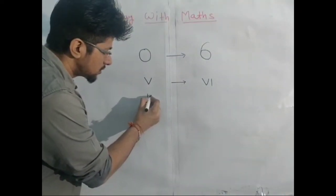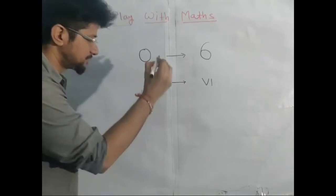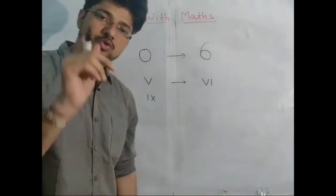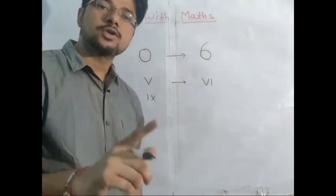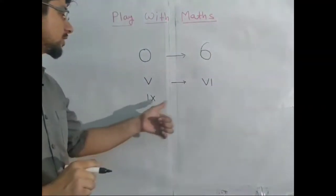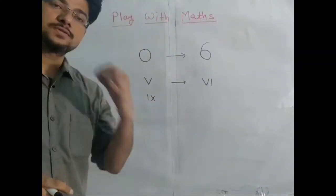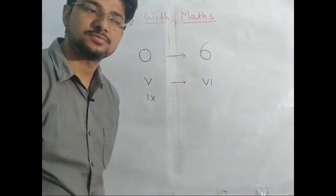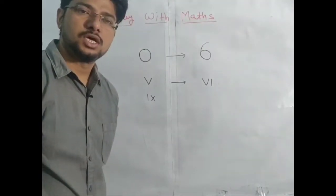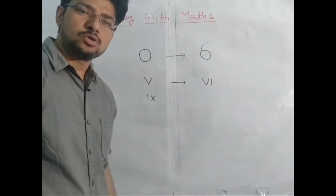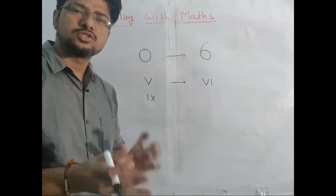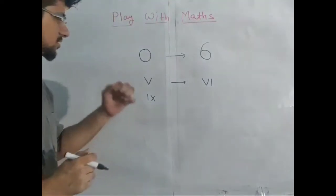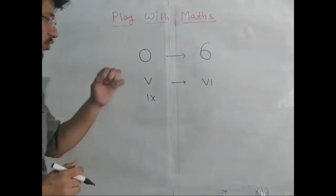This time you have the Roman nine — IX. The condition is the same: you can make a straight line or a curved line. Can you make a six out of this? Think about it — how can you make six out of Roman nine?